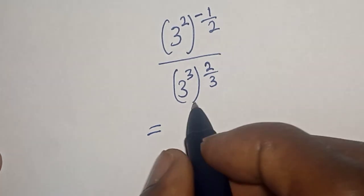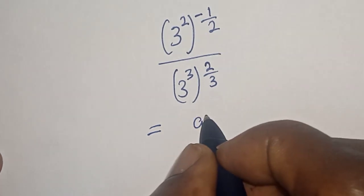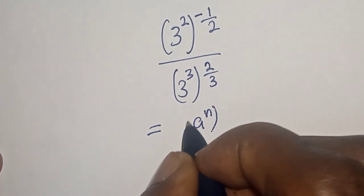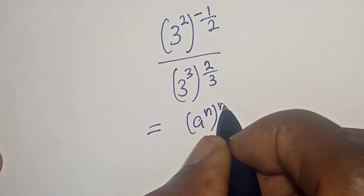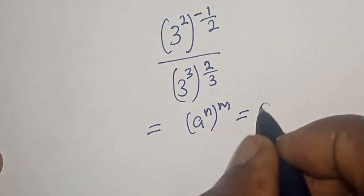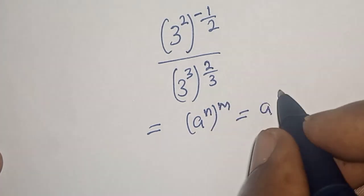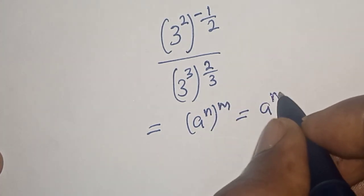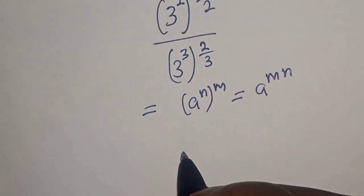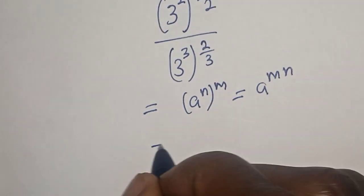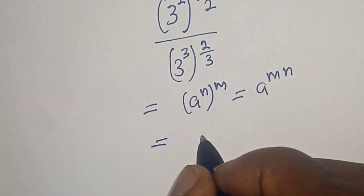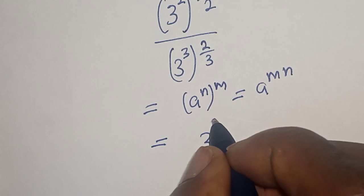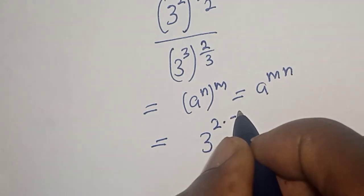Take note of this rule: a to the power of n, to the power of m, is equal to a to the power of n times m. Then this is equal to 3 to the power of 2 multiplied by minus 1 over 2...